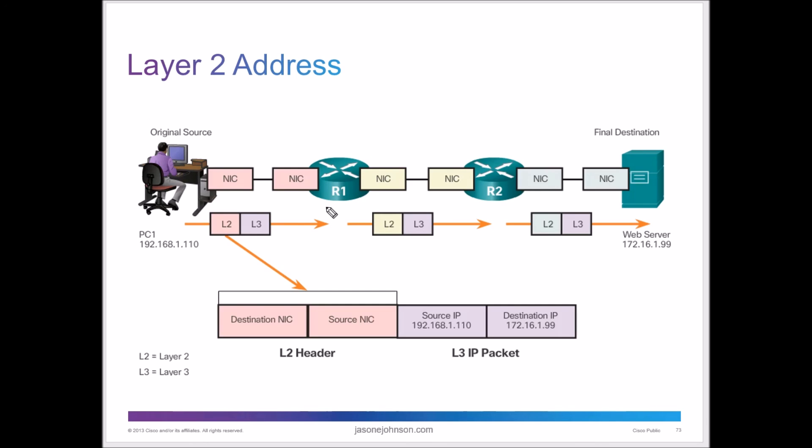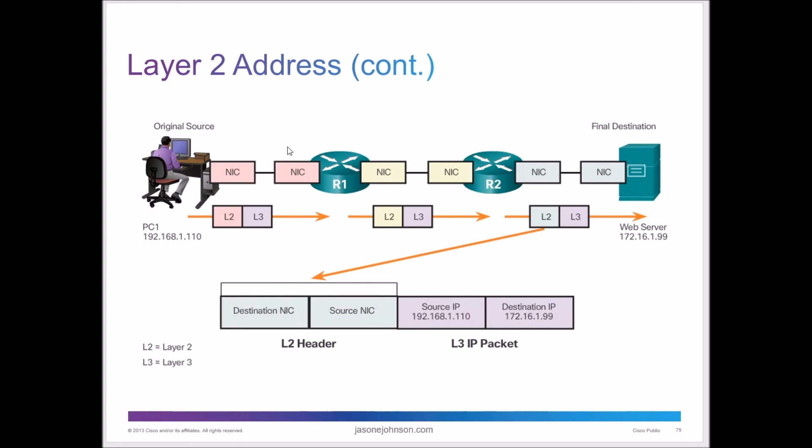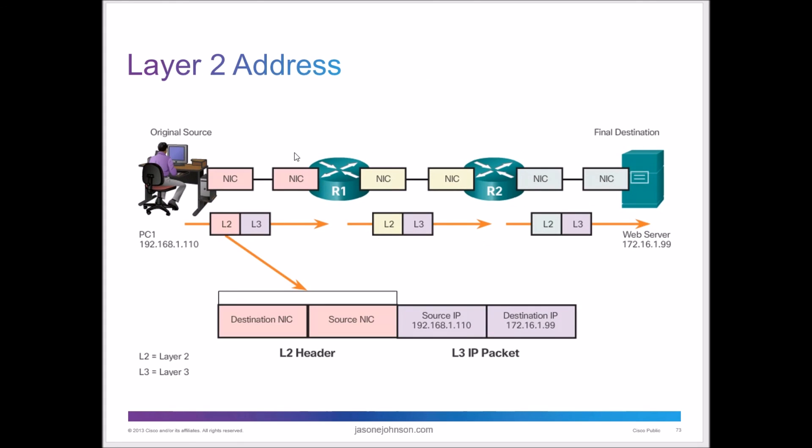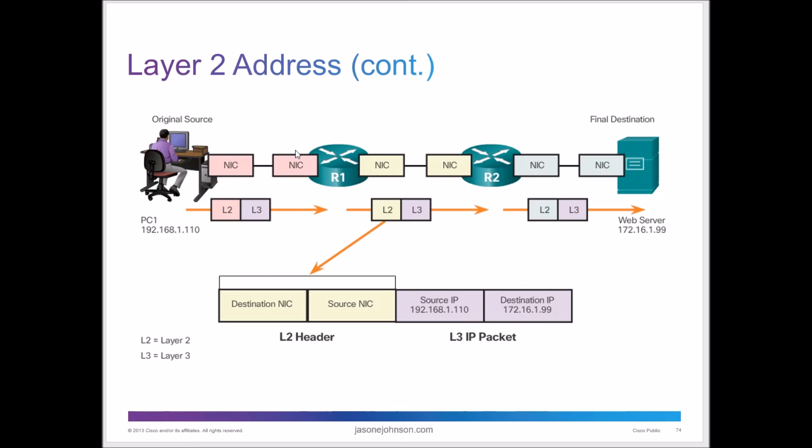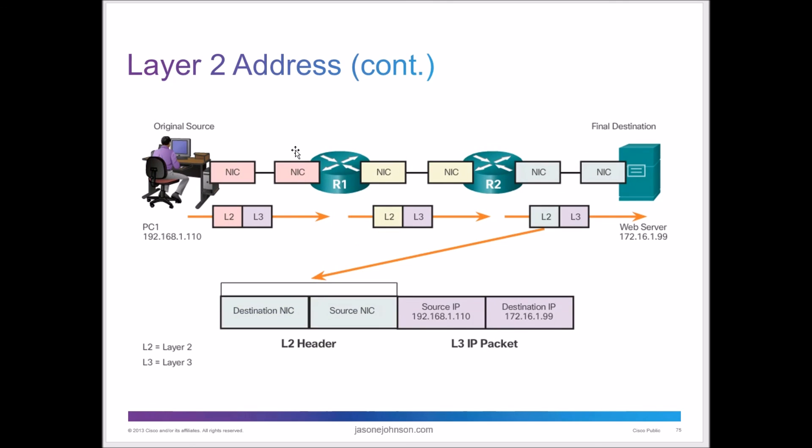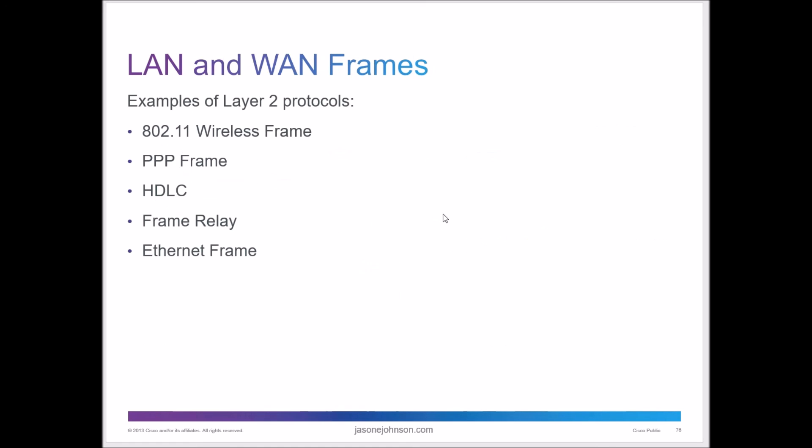So a layer two address looks very similar to what we looked at earlier. You're going to send it on. So you have a layer two, you have your destination NIC and your source NIC. But if it needs to go through routing, it's going to have to add the layer three, or it's going to have to use layer three. So a switch is just going to use this part here. A router is going to use this part here. Layer two heading is still built in there. So even though you're sending layer two and layer three, the layer two is getting read as well. And examples of layer two protocols are 802.11 wireless frame, frame relay, Ethernet frame.